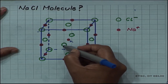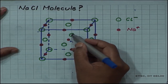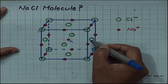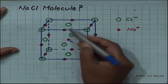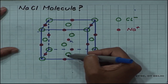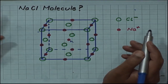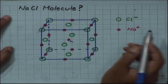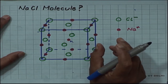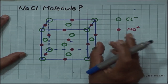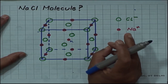The front face, the back face, left face, right face, and top and bottom faces — these 6 chloride ions are equidistant and are nearest to this sodium.